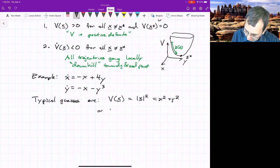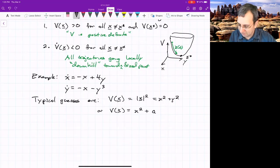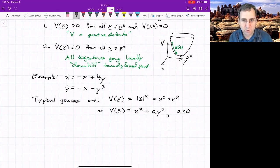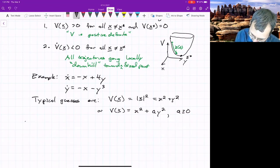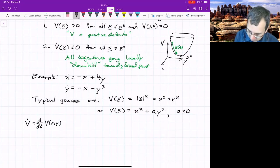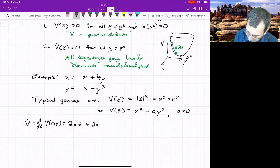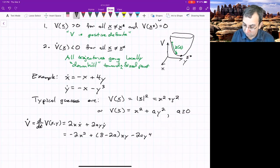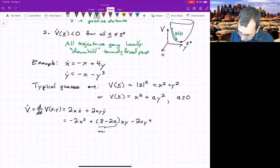How about this? x squared plus some constant times y squared, where a is some parameter that we'll choose later, a is greater than or equal to zero. We can verify property one. Property one is satisfied because of how we've chosen V. Property two is the tricky one. If we take V dot, d by dt of V, which is a function of x and y, now we have to use the chain rule. So this is 2x x dot plus 2ay y dot. And plug in x dot and y dot from up there. We'll get negative 2x squared, skipping some steps, rearranging 8 minus 2a xy minus 2a y to the 4th. We can make the xy term go away. So this is 0 if a equals 4.